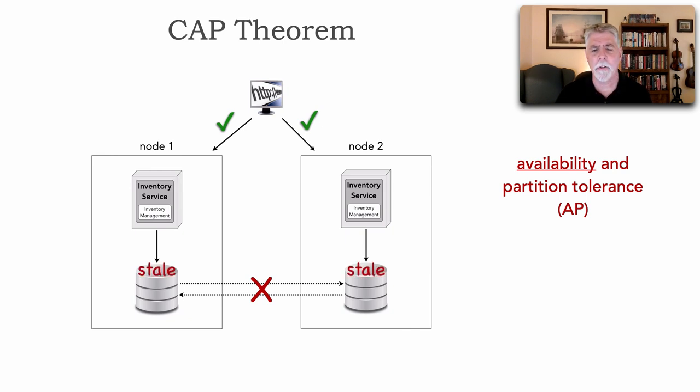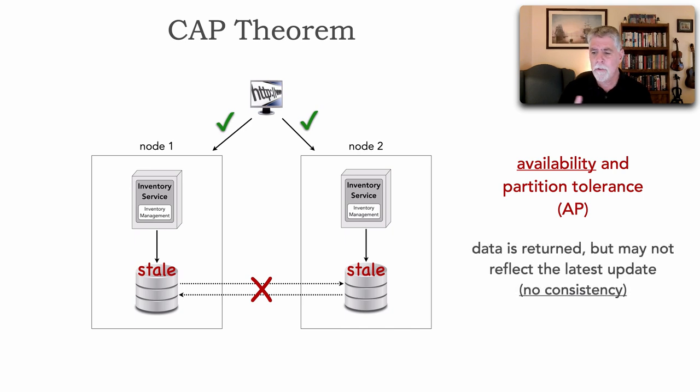So we might be returning stale data. In this case, the trade-off really here is that data is always returned. We get that availability, but it doesn't necessarily reflect the latest update. So we don't have any consistency of our data.